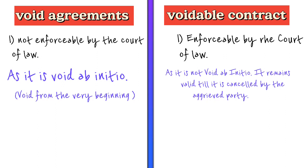The aggrieved party is the party who has incurred the loss. For example, if A has forced B to enter into a contract by threatening him, and B does not tell this to anyone, then that contract will be valid. But if B goes to the court and says that A had forced him to enter into the contract by threatening him, then the contract can be cancelled.